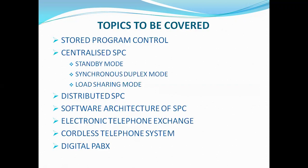We have centralized and distributed units. If any stored program control has a centralized processor — that means a single processor — it is called single processor, but nowadays it is dual processor only. So if any system is having a centralized dual processor, that is called centralized switching program control. It can be of three types: standby mode, synchronous duplex mode, and load sharing mode — basically the modes of the processor based on the condition of the two centralized processors.